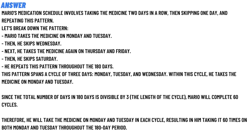The correct answer of the question is: Mario's medication involves taking medicines two days in a row, then skipping one day, and repeating these patterns. Let's break down the pattern. Mario takes the medicines on Monday and Tuesday.